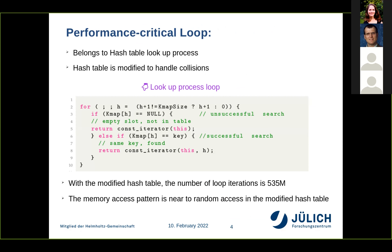Here you can see the performance critical loop of Calisto, which has 535 million iterations for our test case. As you can see, the most common operation done by the loop is loading from memory, and the memory access pattern here is roughly random access.